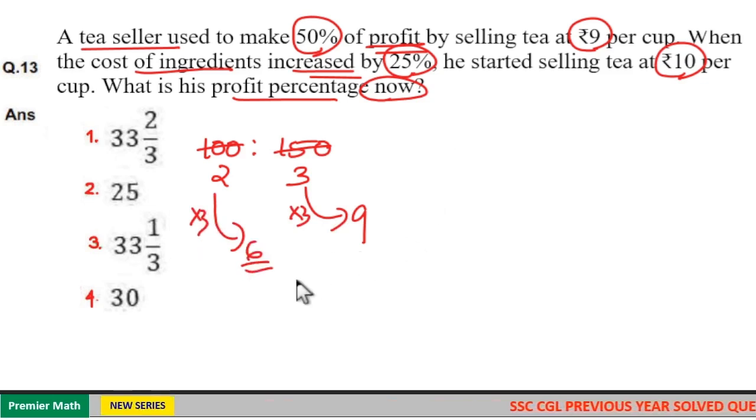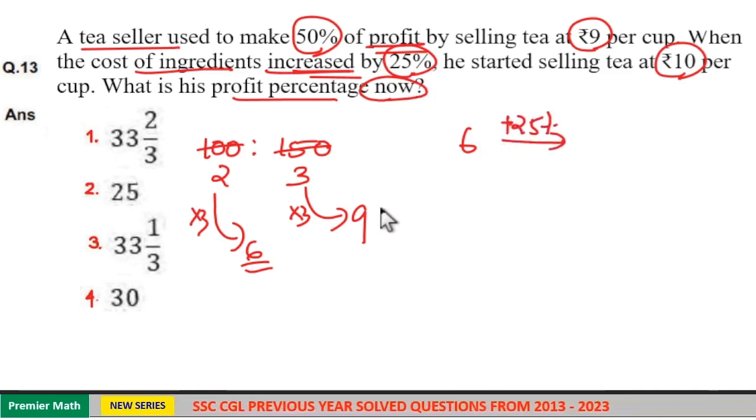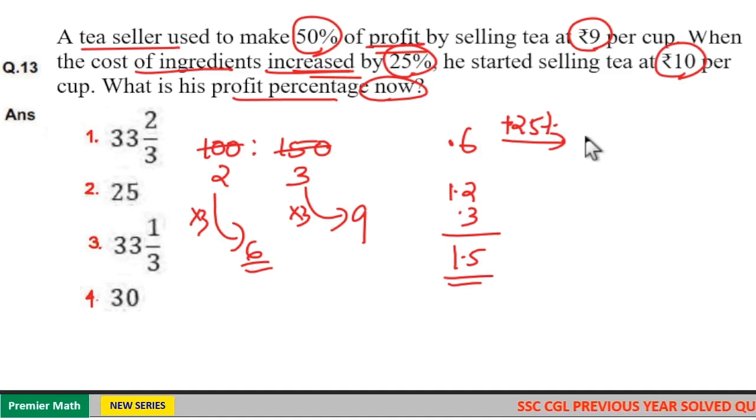If cost price is 6 rupees, now cost price increased by 25 percent. 25 percent: 10 percent of 6 is 0.6, 20 percent is 1.2, and 5 percent is 0.3, 0.6 by 2 is 0.3. So total increment is 1.5 rupees, so 6 plus 1.5 equals 7.5 rupees is the cost price now.